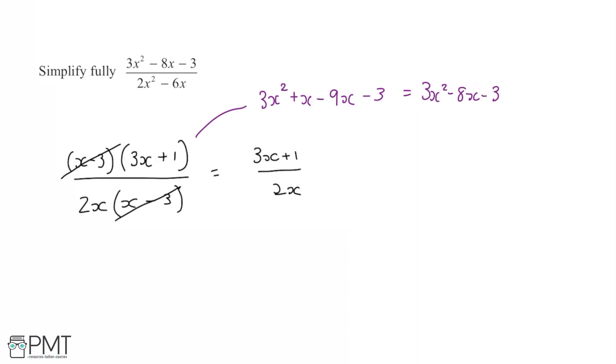We get the first mark for either breaking the numerator or the denominator down into its correct factors, and the second mark is going to be for getting both the numerator and denominator factorised correctly.